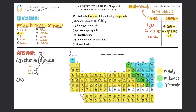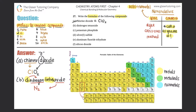B: dinitrogen tetroxide. Nitrogen and oxygen are both non-metals, so it's a covalent compound. You can also tell from the prefixes di and tetra. With covalent compounds it's call it as you see it: dinitrogen means di equals two, so N₂. Tetra oxide means four oxygens, so the formula is N₂O₄.